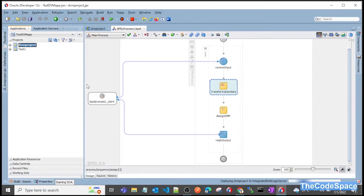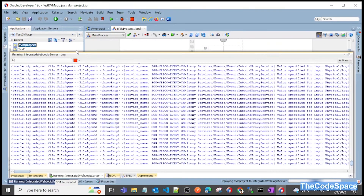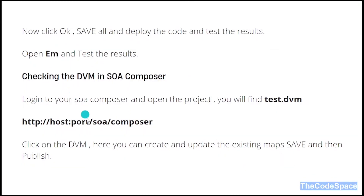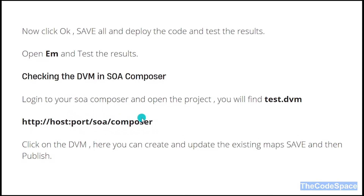If we want to update something in our DVM, we don't need to change anything in our code and we don't need to redeploy. That is the magic of DVM — we can update our DVM directly from the server through SOA Composer. That is the great advantage. So later we'll go to SOA Composer and update our DVM.